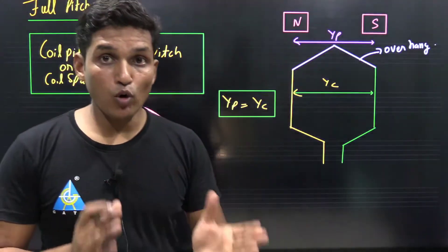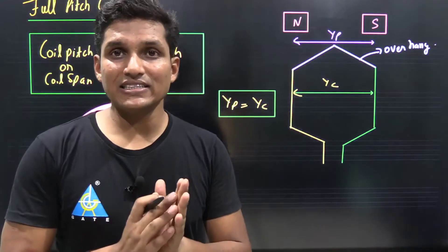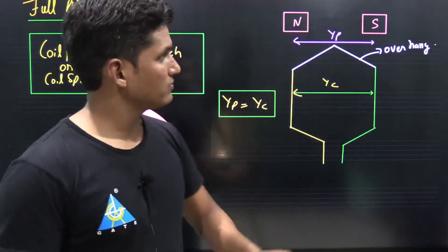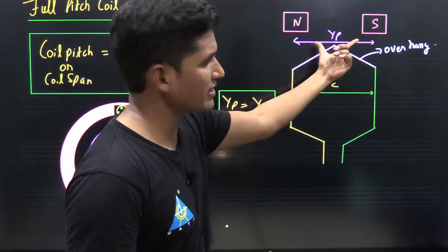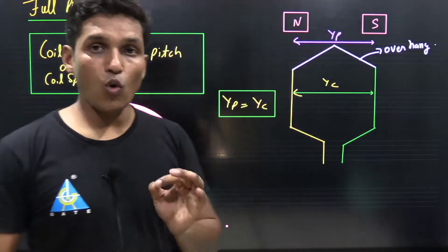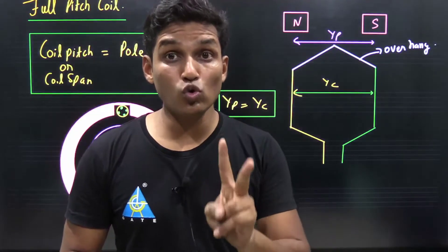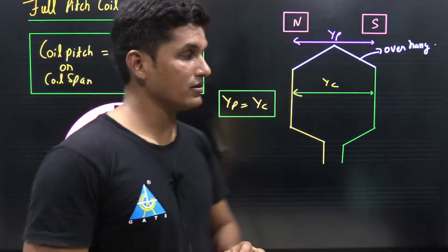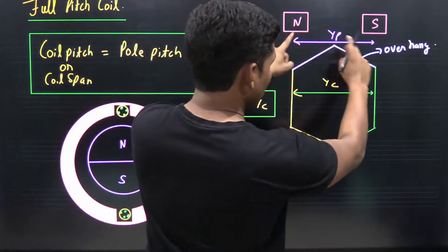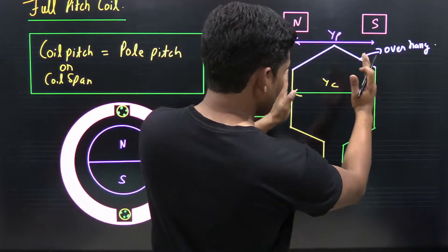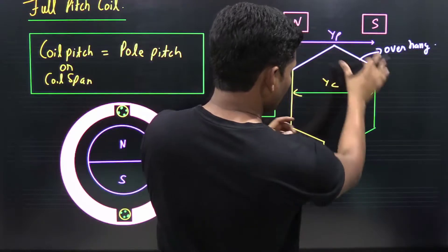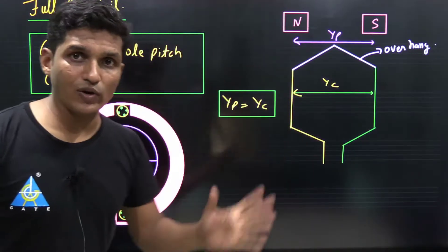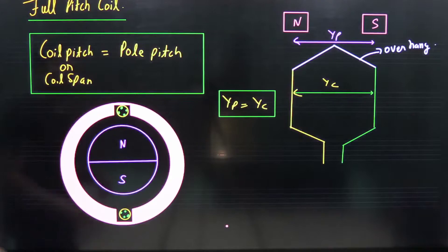What is pole pitch? Pole pitch is the distance between two consecutive poles — north and south — that is YP. Whereas coil pitch is the distance between two coil sides of a coil, that is YC. If YP is equal to YC, then it is said to be a full pitch coil.